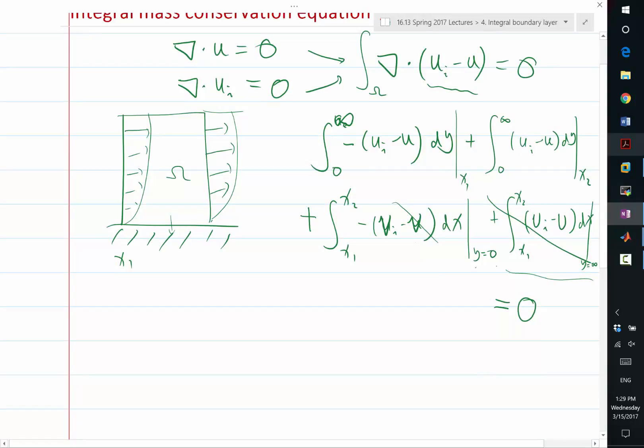By collecting what is left, we basically got integration of ui minus u dy, the difference between x2 and x1. This is this. Is equal to integration x1 to x2 of vi dx, right? At y equal to zero. At y equal to zero, yes.